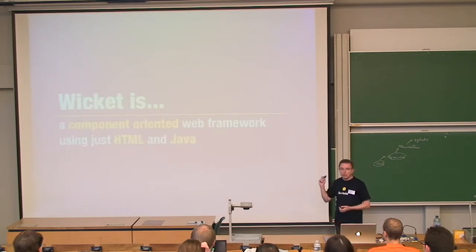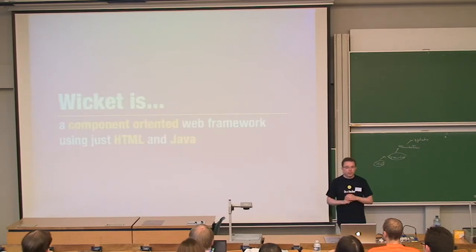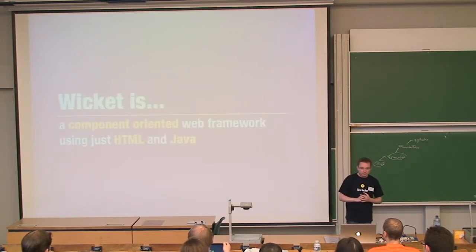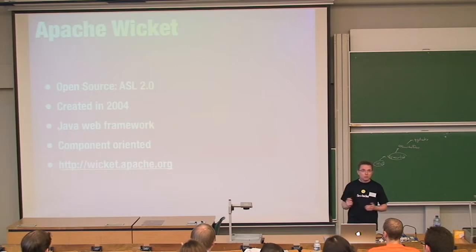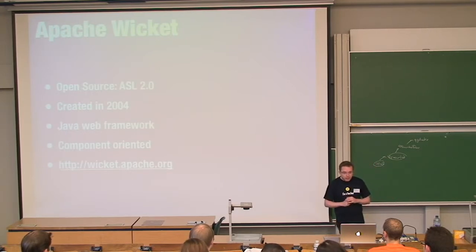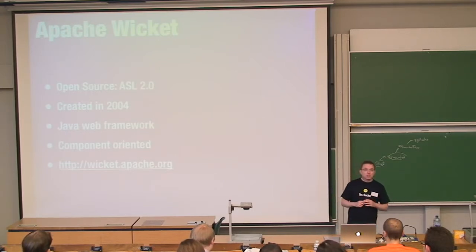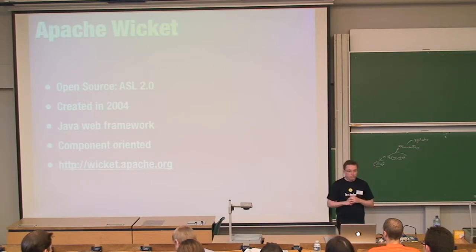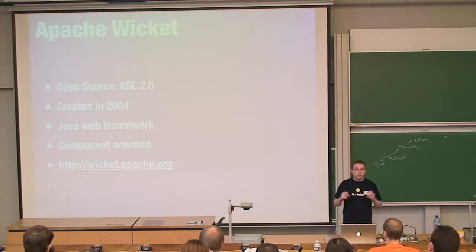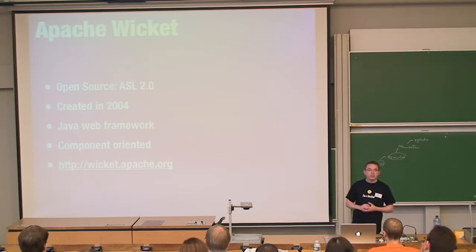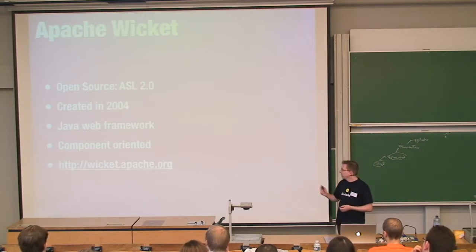The introduction. What is Apache Wicket? It's a component-oriented web framework using just Java and HTML. It's open source — otherwise I wouldn't be standing here — Apache licensed, so anybody can do with it whatever they want. It was created in 2004. It's a Java web framework, it's component-oriented, and you can find it at the URL at the bottom.